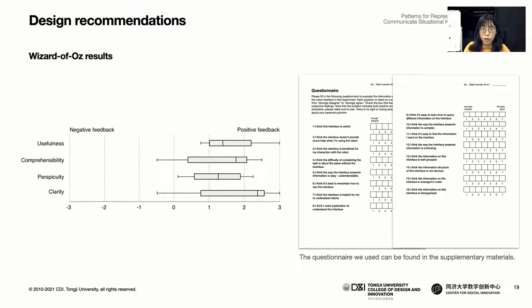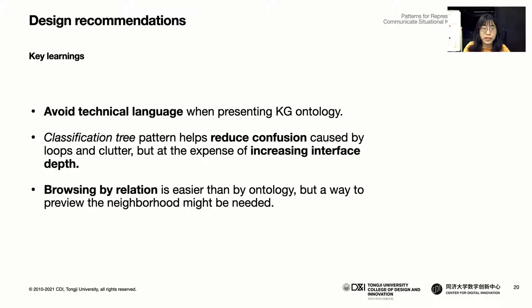Overall, the 10 participants of the testing responded positively regarding the interface. Interviews with them highlighted several design recommendations. Technical language in the ontology can confuse users, so it's better to use user-friendly language when presenting the KG data. Loops in the KG structure and a large number of similar elements also confuse users when browsing the interface.